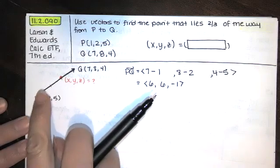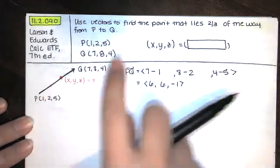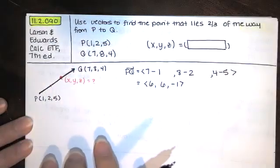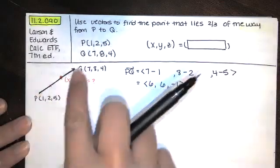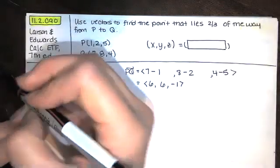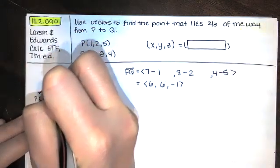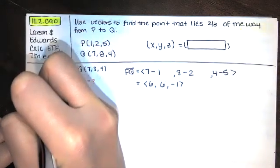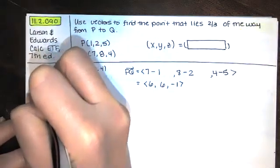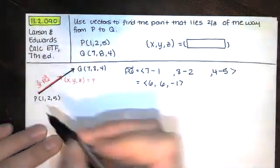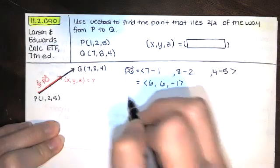Now if we want to find the point that's two-thirds of the way from P to Q, rather than looking at this vector, I'd like to look at this vector. This vector has exactly the same direction, it's just two-thirds the length. So we will take this vector PQ and multiply by two-thirds.